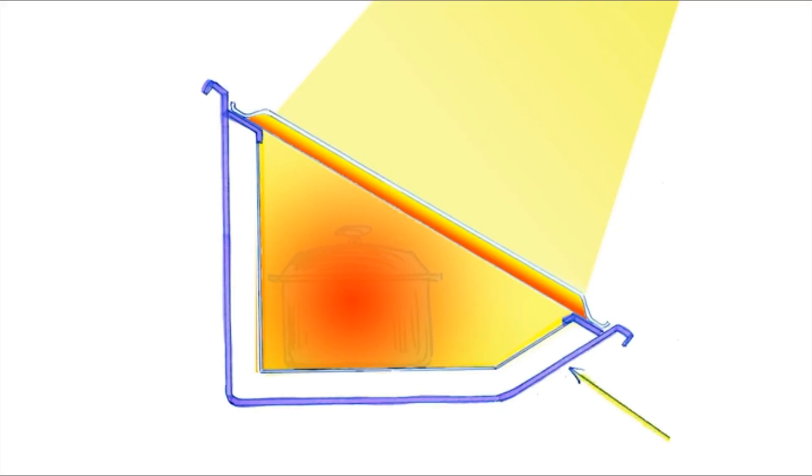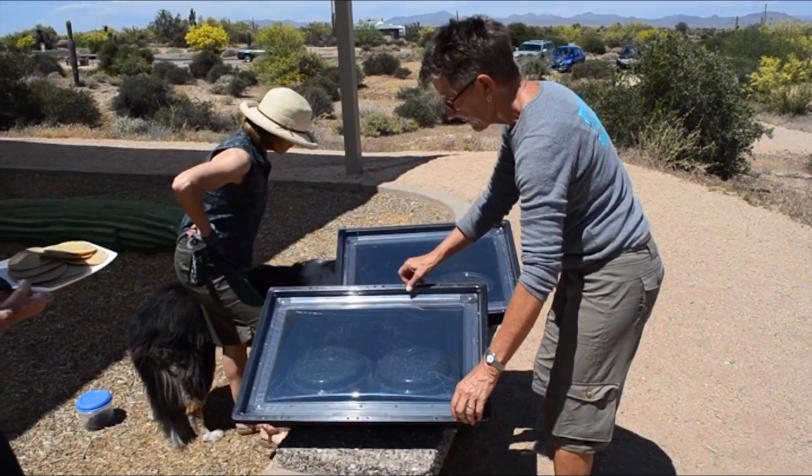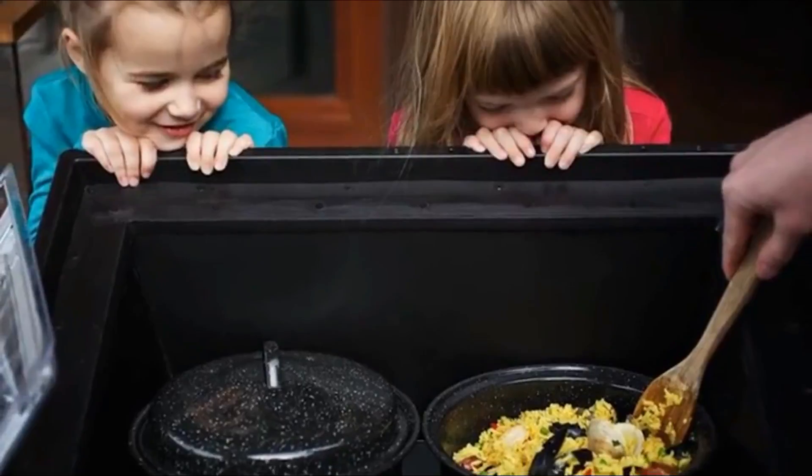The tough, durable outer case with its super-efficient insulation allows the heat to build inside, while keeping the exterior cool to the touch. This makes it safe to handle while cooking and safe around children.